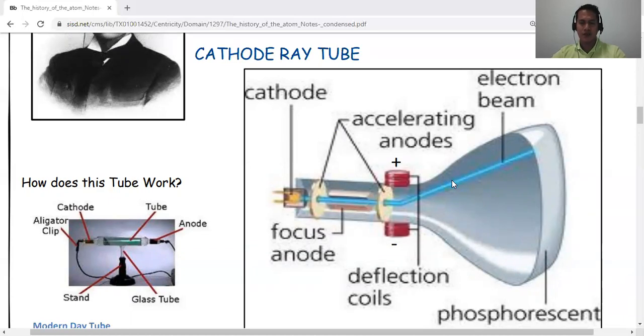He was able to conclude that this is made up of negatively charged particles or electrons. He did several experiments. He used a magnet to see if these particles would repel or attract. He was able to conclude that this is made up of negatively charged particles because when he used the negative part of the magnet, these particles repelled.